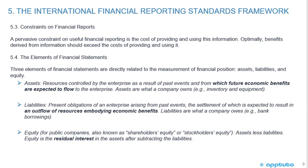Constraints on financial reports: a pervasive constraint on useful financial reporting is the cost of providing and using information. Optimally, benefits derived from information should exceed the cost of providing and using it — so the constraint is basically a cost-benefit situation. The elements of financial statements: three elements are directly related to the measurement of financial position — assets, liabilities, and equity. Recall: assets equals liabilities plus equity.